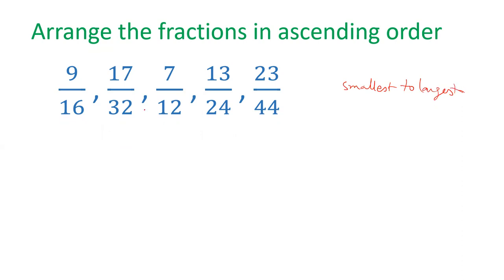Friends, all these fractions follow a particular pattern. The denominator is 16 and the numerator is 9, which is 1 more than half of the denominator. This is true for all the fractions. For example, half of 32 is 16, plus 1.